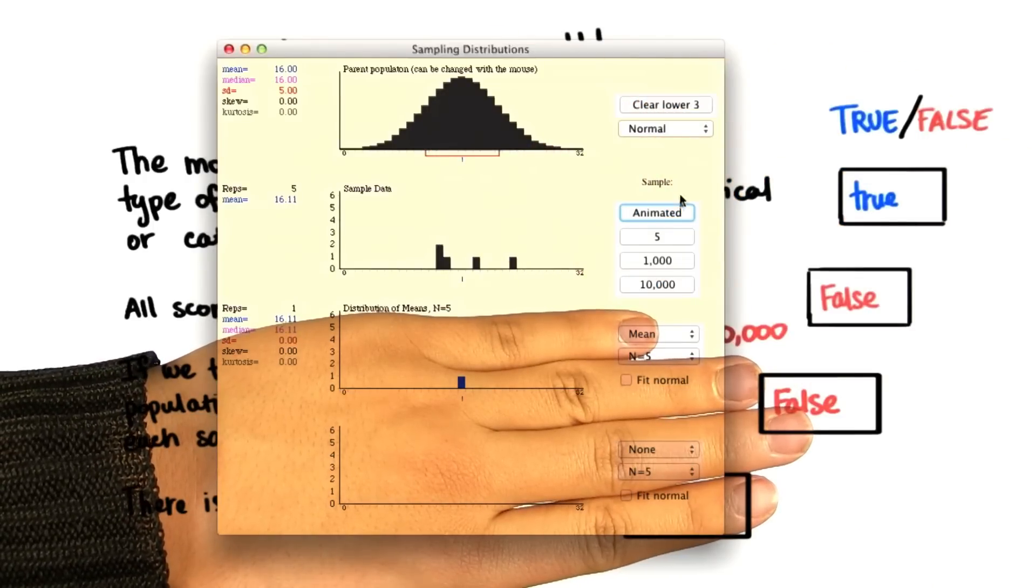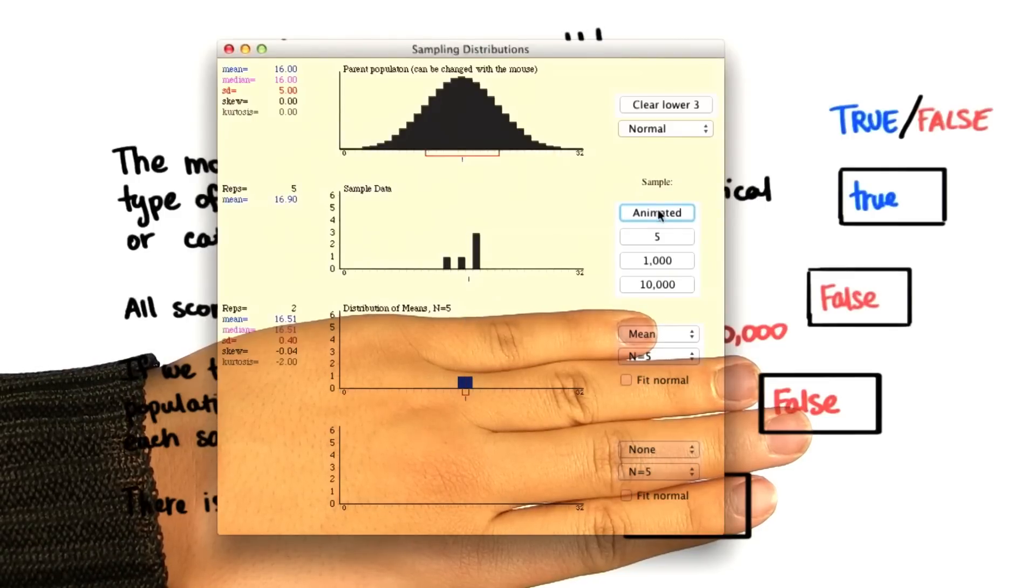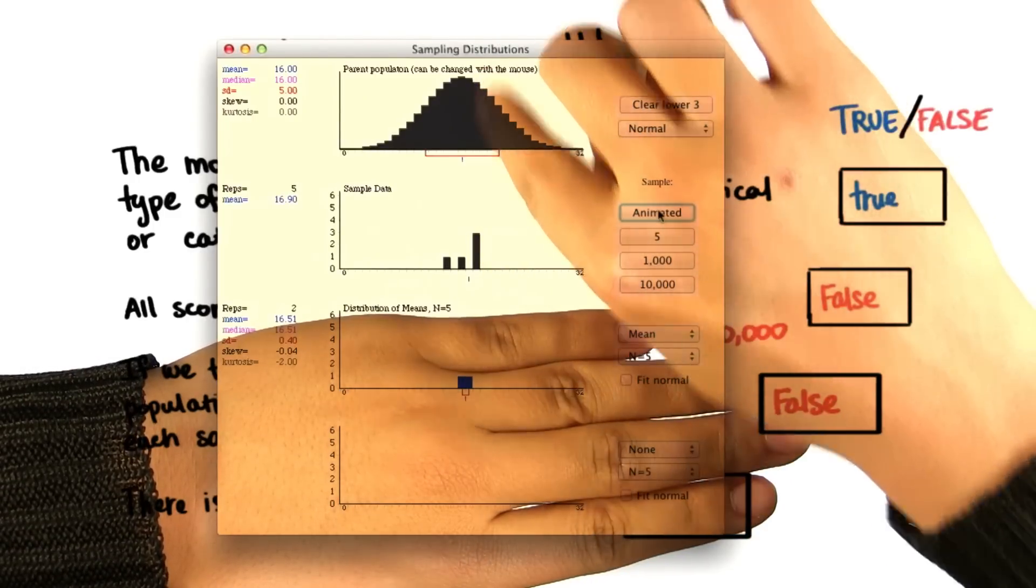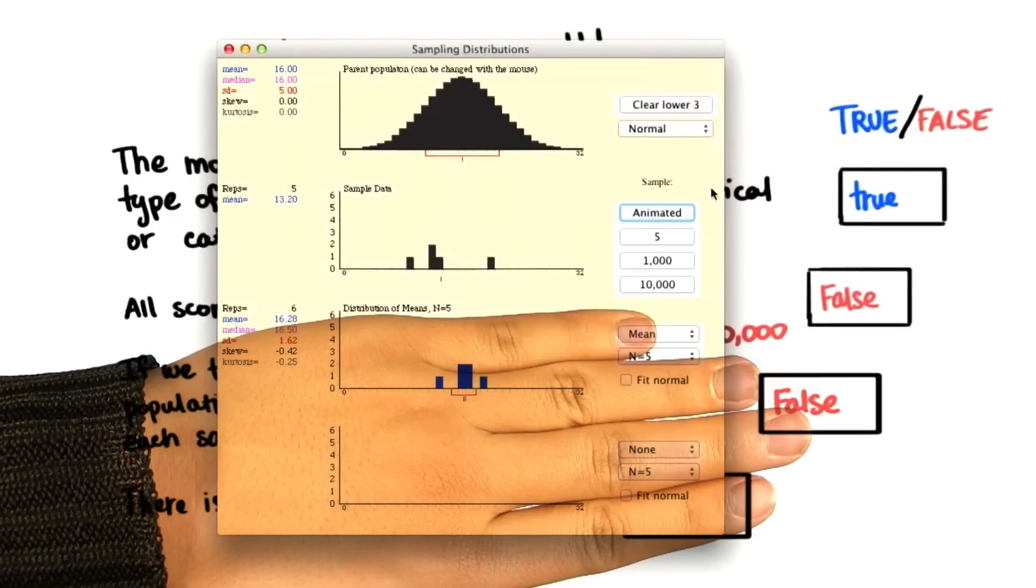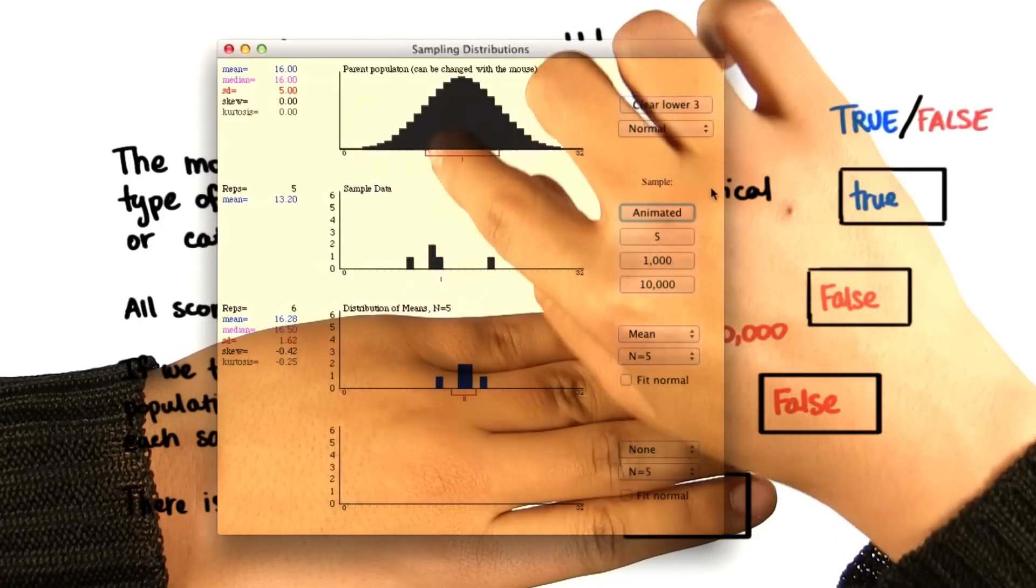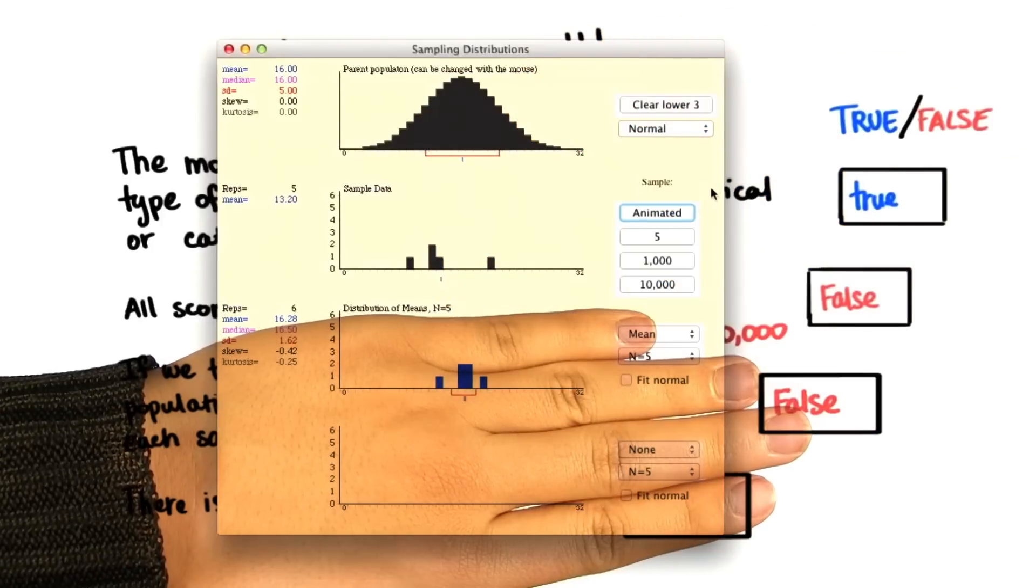Let's do it again. Now, the mode is here at the right of the distribution. If we do it again, the mode is again at the kind of far left of the distribution.